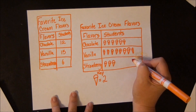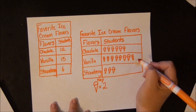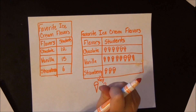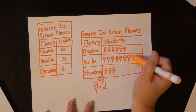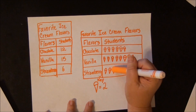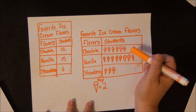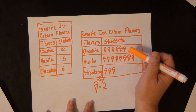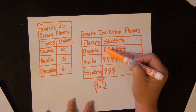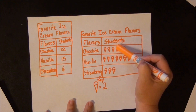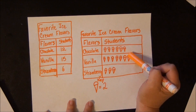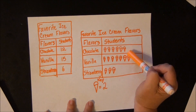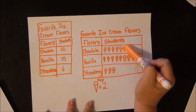And there is your picture graph. Now you can interpret this data as well. What flavor do students like most? Vanilla. What flavor do students like least? Strawberry. How many more students like vanilla than chocolate? You can match up the cones for the same number of students, then count the extras as your difference. So 3 more students like vanilla than chocolate.